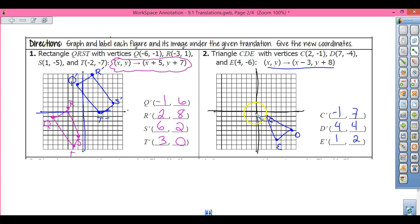And then I plot. Make sure you're labeling your points. (-1, 7) is C prime. (4, 4) is D prime, and (1, 4) is E prime.